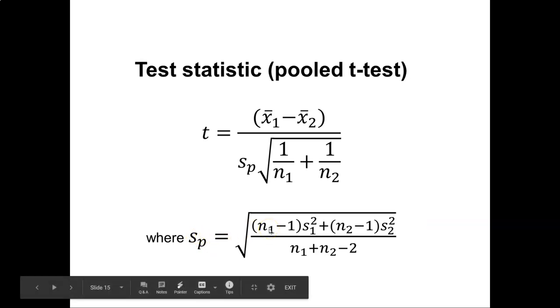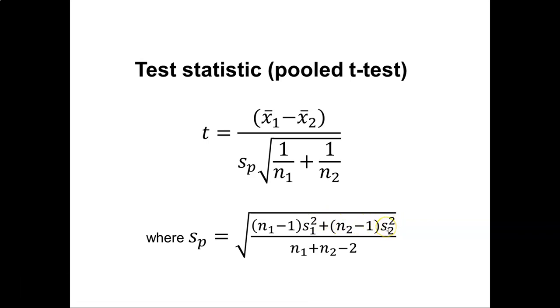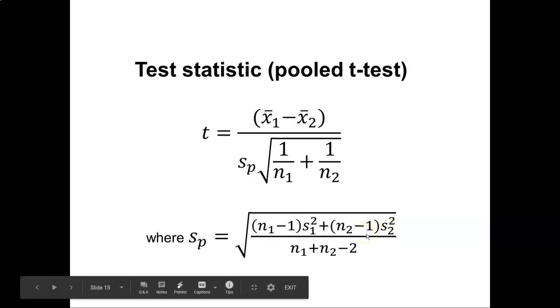And in this case we take n1 minus 1, multiply it by the sample variance, and then we take n2 minus 1, and multiply it by the sample variance for the second sample. And then in the denominator, we add the number of observations for each sample, and minus 2.